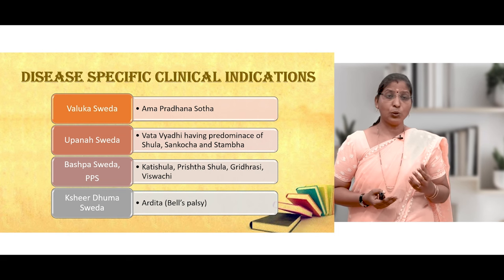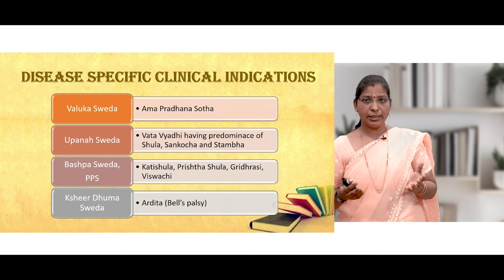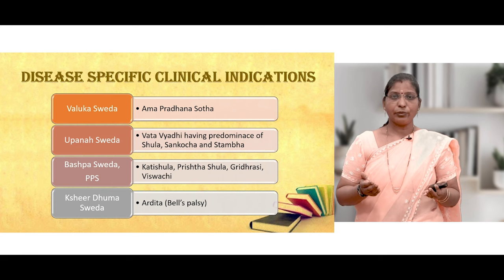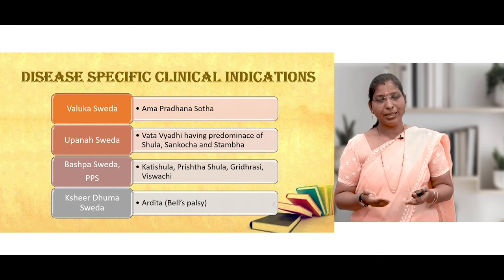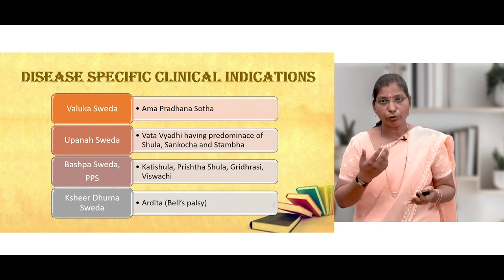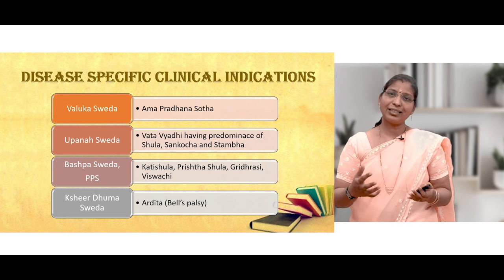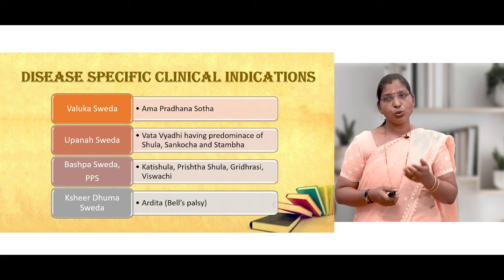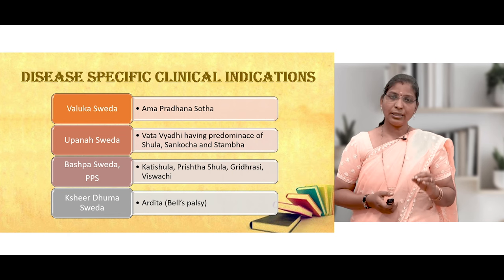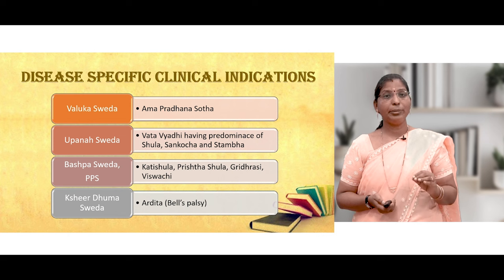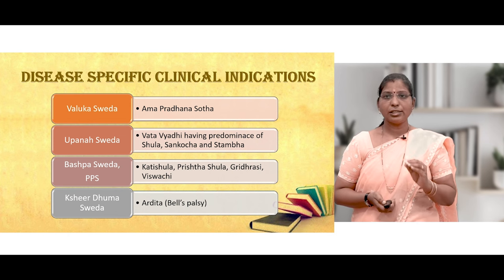Kshira Dhumam: Bala Kashaya is prepared with milk, and the fumes from that Kshira are used for Kshira Dhumam. It is a special indication for Bell's palsy or Ardhita, done after Abhyanga with Navunita.